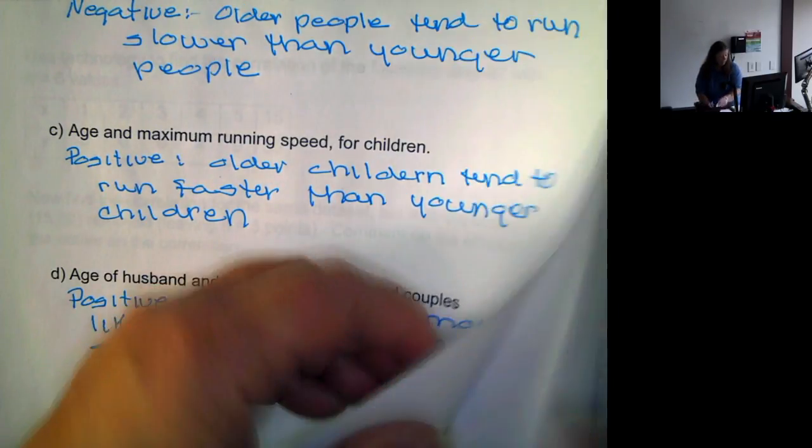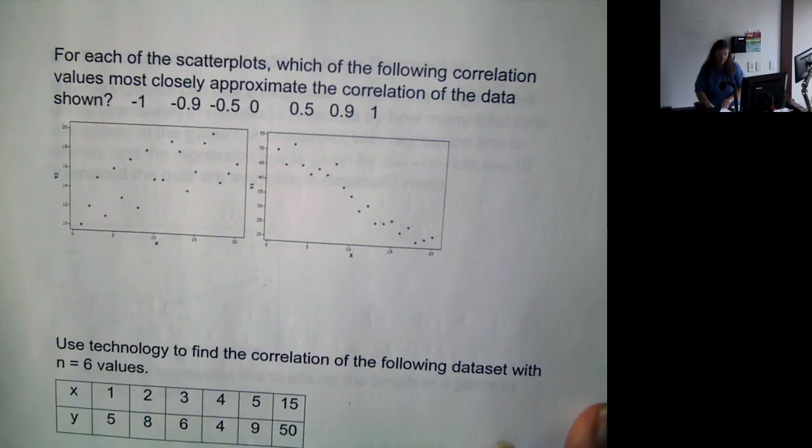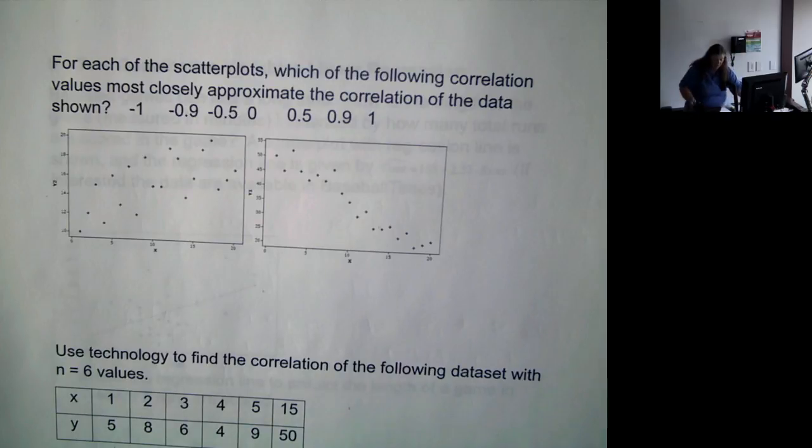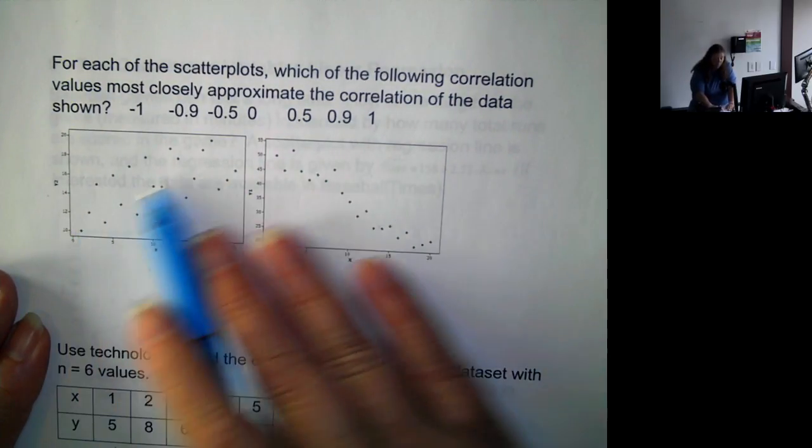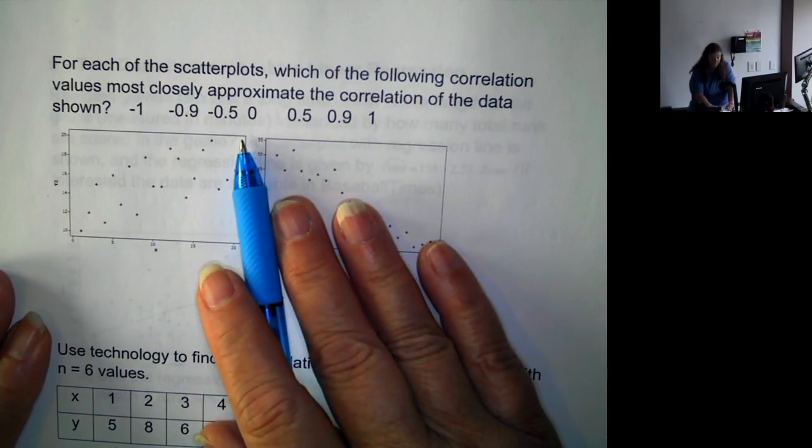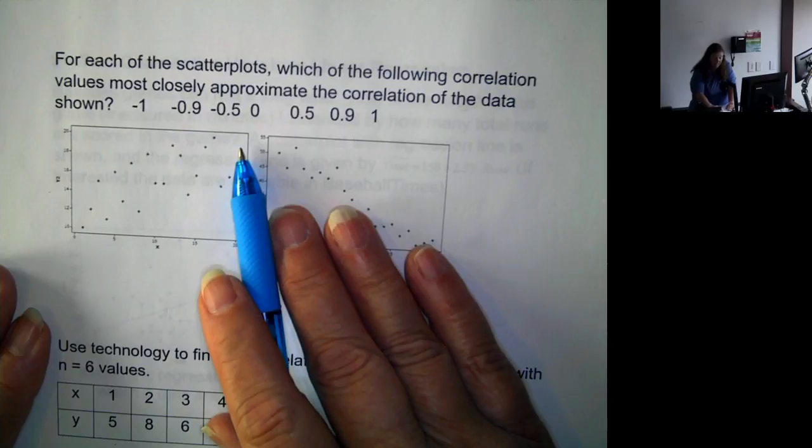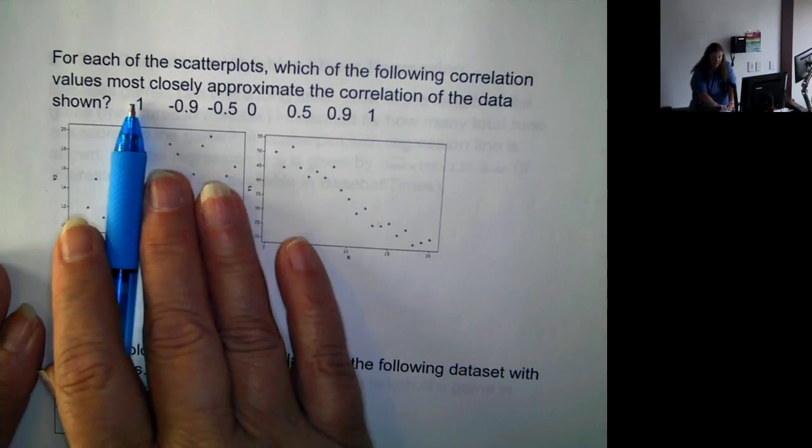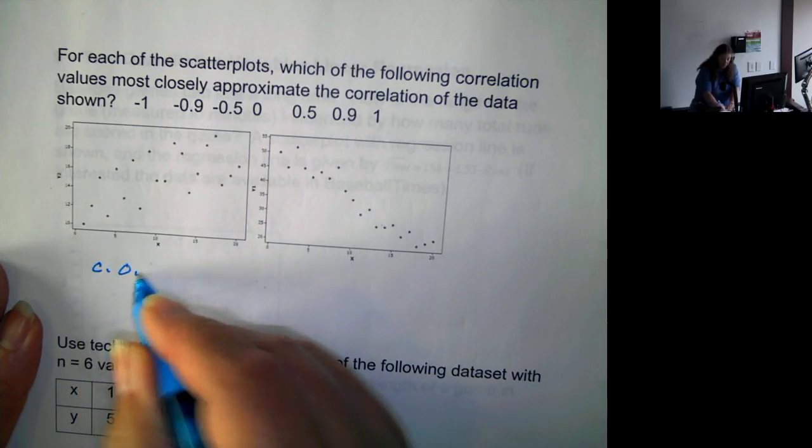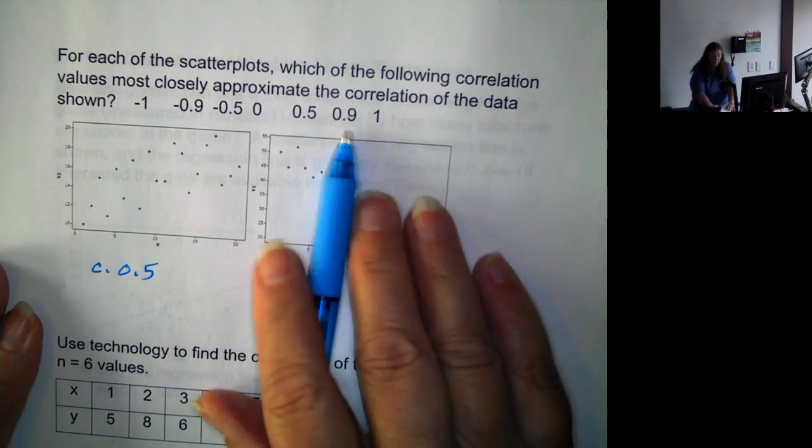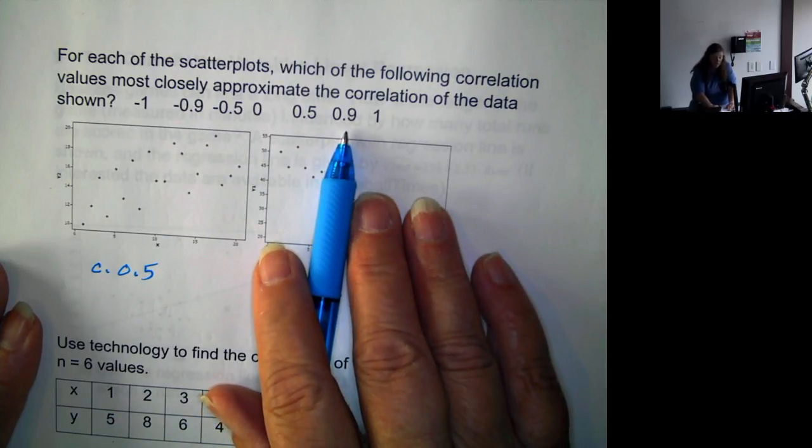Now, let's look at some scatterplots. We have two scatterplots, and we want to know which of the following correlation values most closely approximate the correlation of the data. Well, this first one, it's all kind of going in a general upward motion. They're not grouped too closely together. So that will eliminate all the negatives and zero. It's probably going to be about 0.5. 0.9 would be grouped pretty closely together.